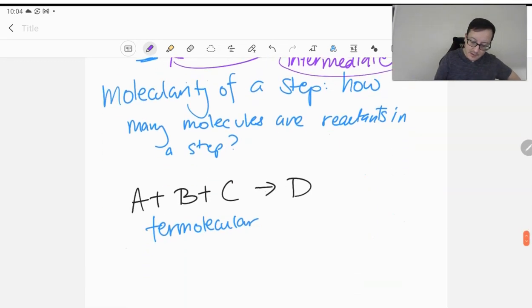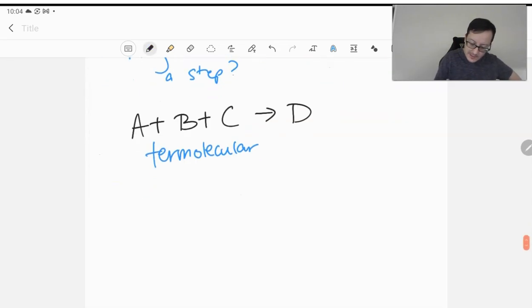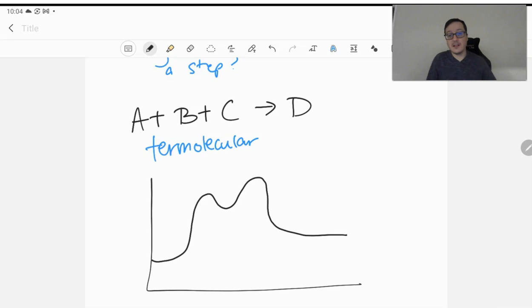And on a reaction diagram, a reaction coordinate diagram, what that looks like is if we're having multiple reactions happening, multiple elementary steps within a reaction, that might look like this. Now we have two humps. Here we have A. Here we have E plus C. And then we have C plus D. C just kind of stays there.